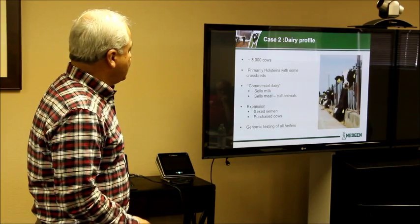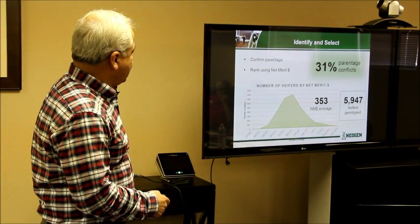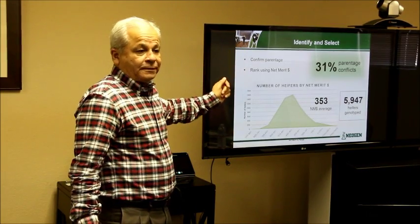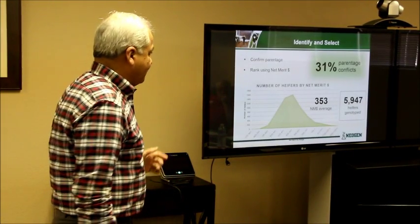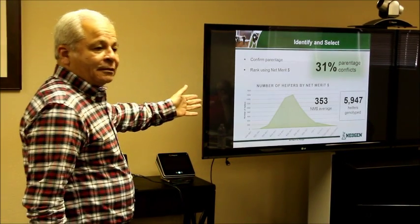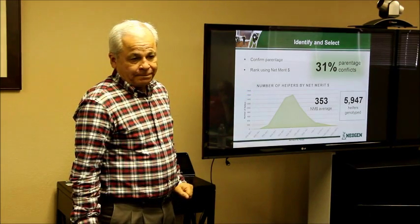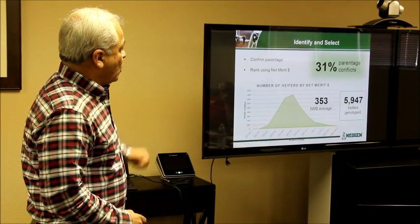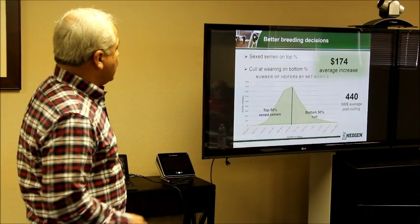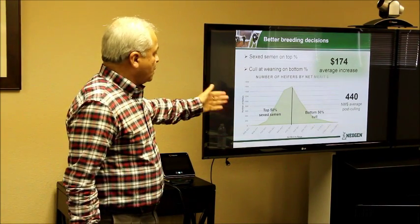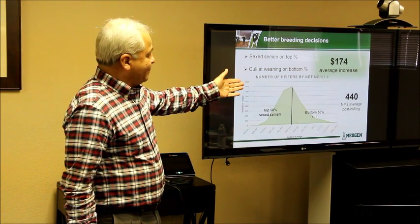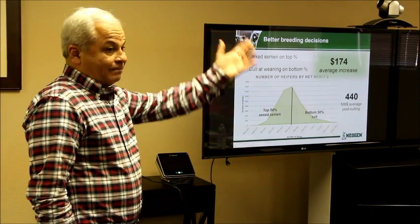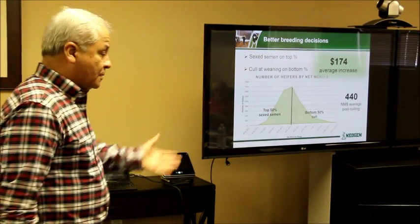He had about 31% conflicts on parentage — 31% error. The average net merit in this herd was 353, out of almost 6,000 heifers that we genotyped. After culling the bottom animals, we raised his net merit to 373. Right there he's improving — he's seeing the benefit, he's seeing the profit.